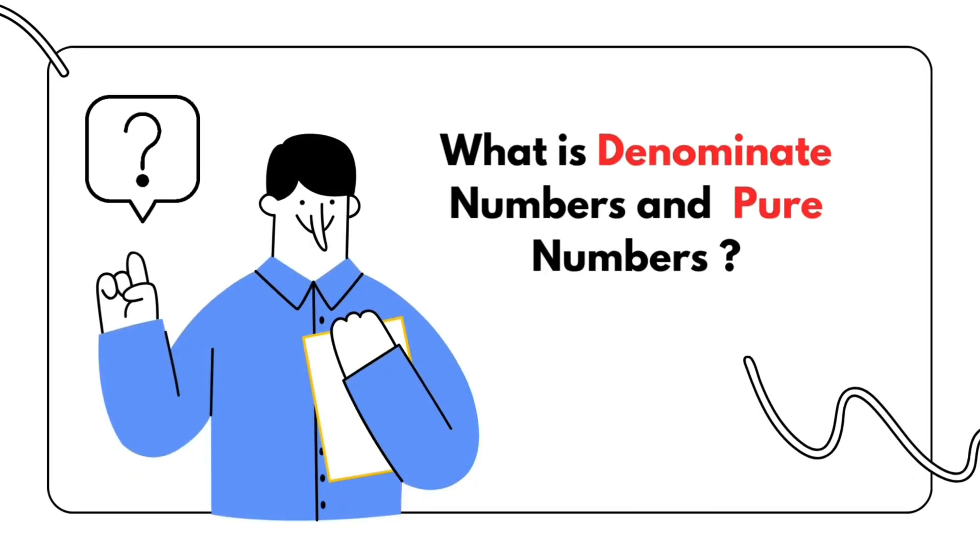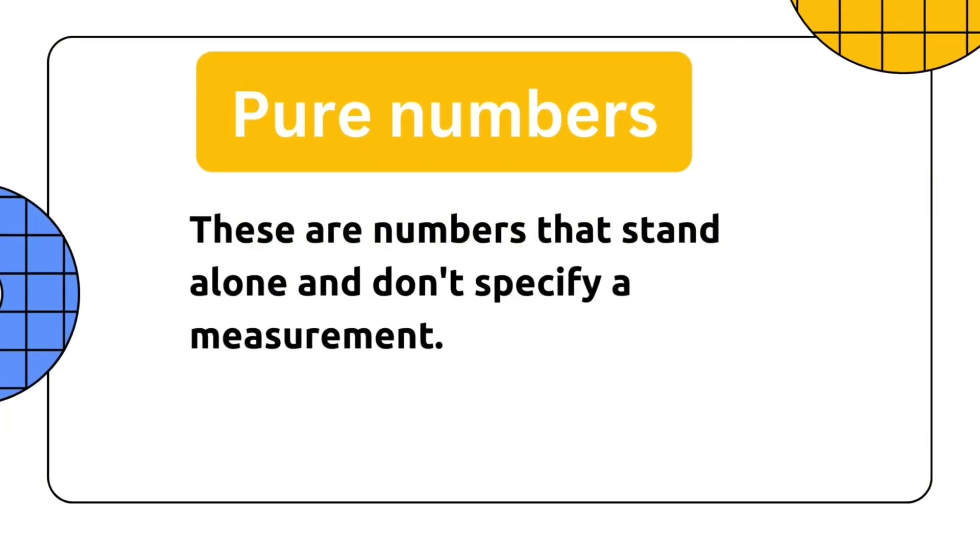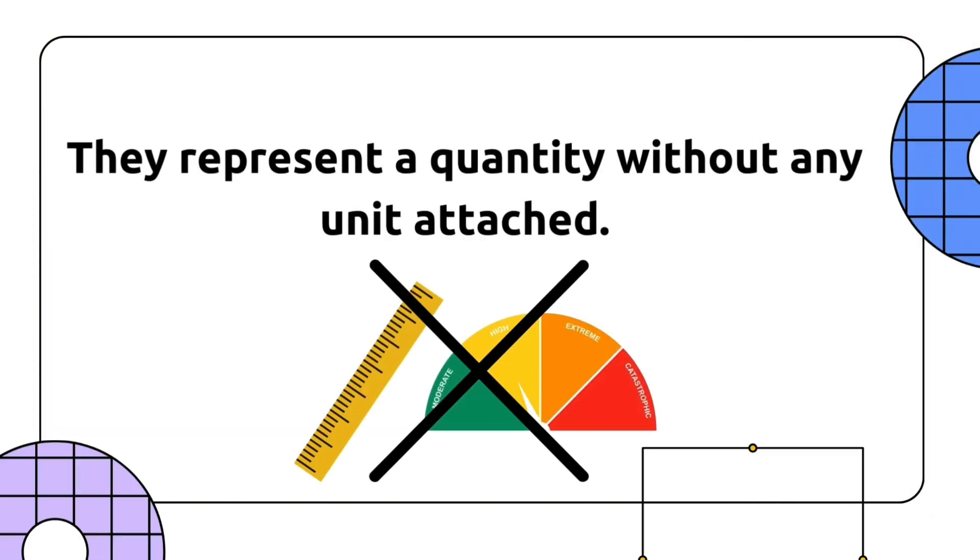What is denominate numbers and pure numbers? Pure numbers. These are numbers that stand alone and don't specify a measurement. They represent a quantity without any unit attached.